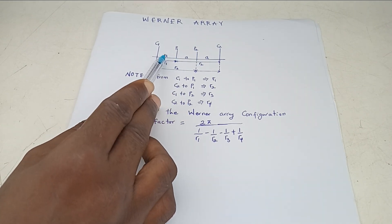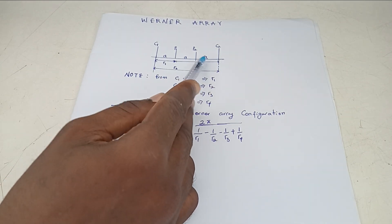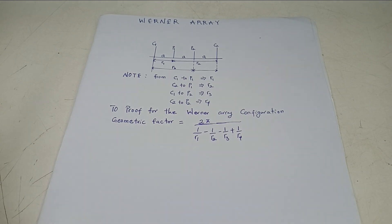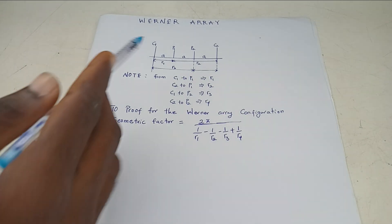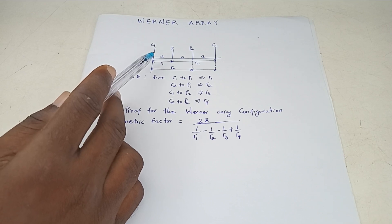So here you can see that the distance between C1 and P1 is A, P1 and P2 is A, and P2 and C2 is A. So in Wenner array, just note that the distance between two electrodes is the same.